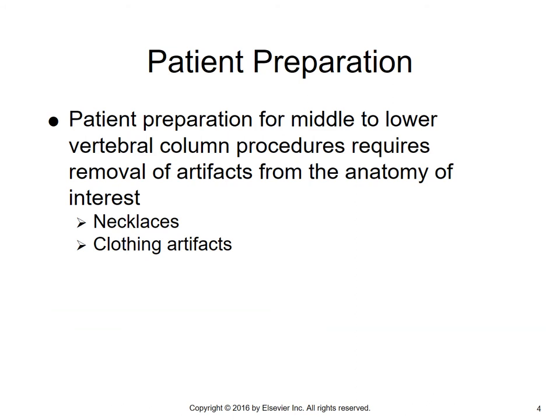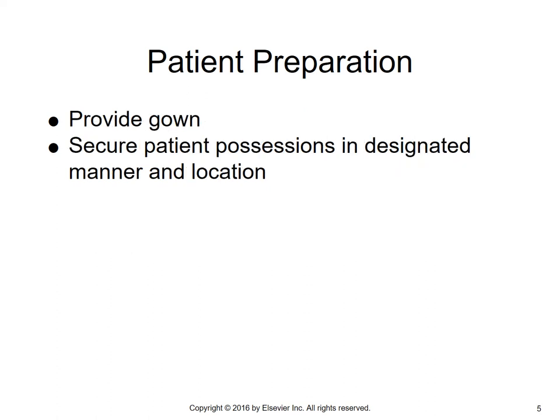For patient preparation for a thoracic spine, middle to lower vertebral column procedures require removal of artifacts from the anatomy of interest — any necklaces, clothing artifacts, a bra for a female patient. Make sure you have everything from the waist up removed, then have the person put on a hospital gown. Secure the patient's possessions in a designated manner and location within the room.